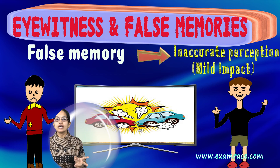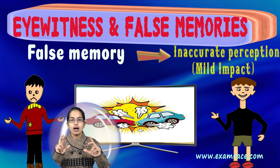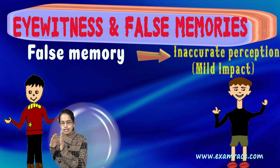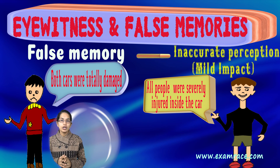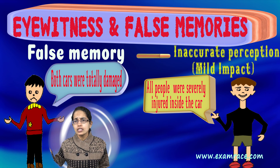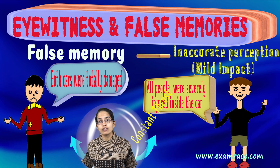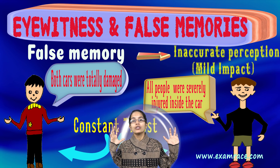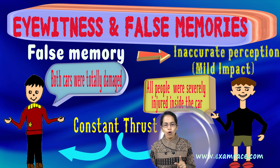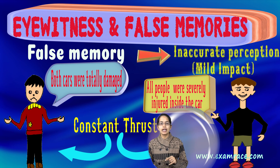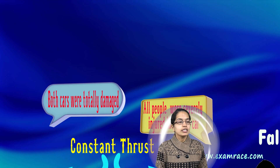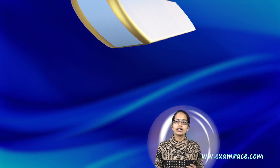This change was because of the generation of false memory caused by the film that was shown to you. There was a kind of constant thrust given onto your memory systems, and that led to the generation of false memories — the imagination of events that did not actually take place.